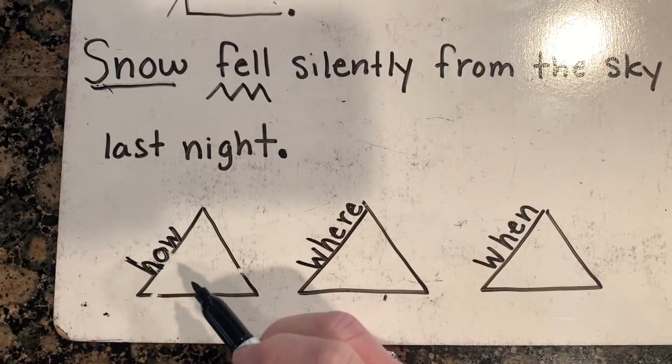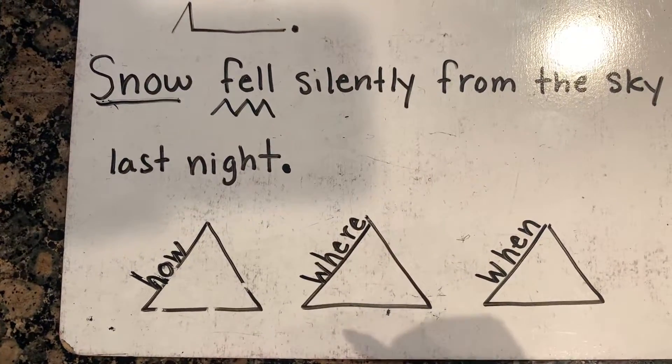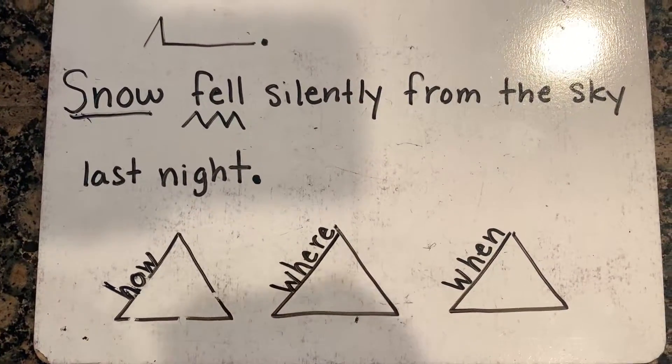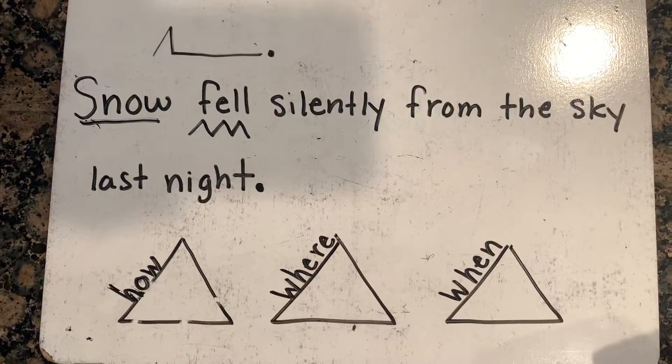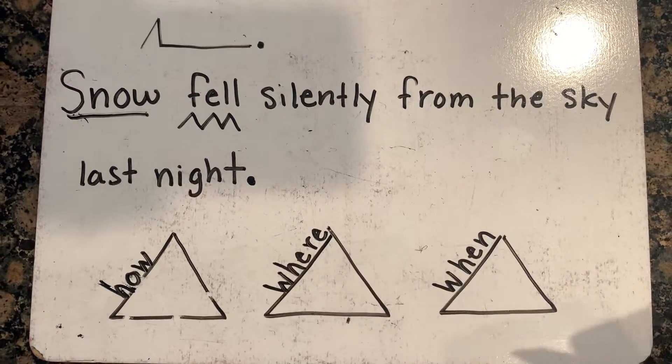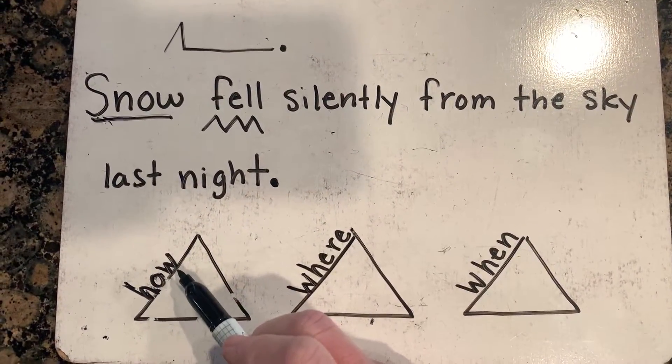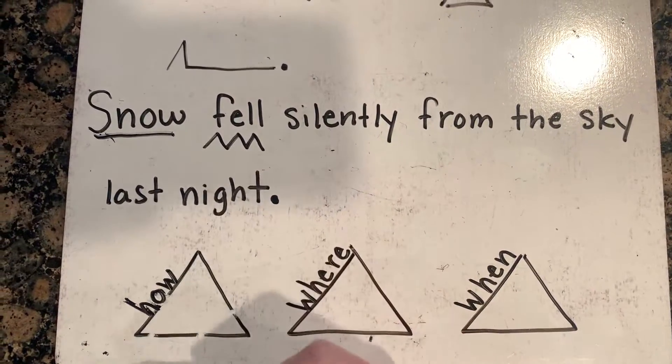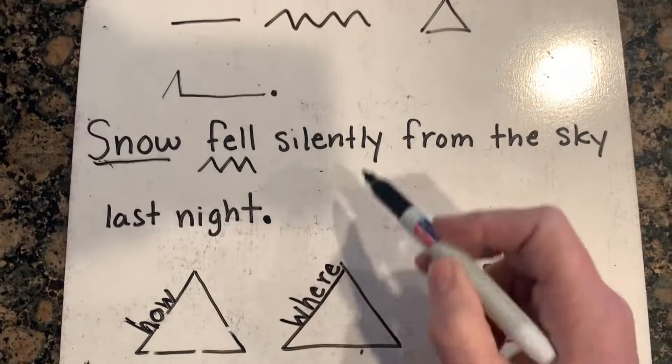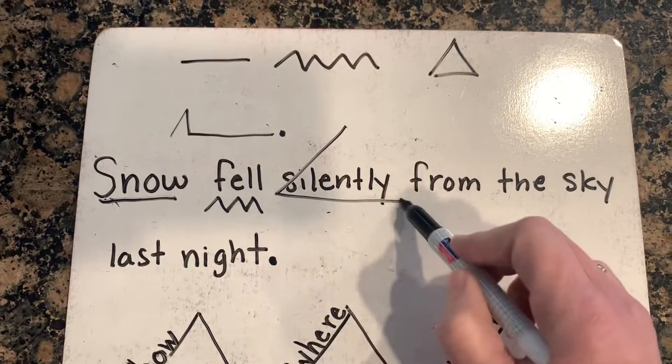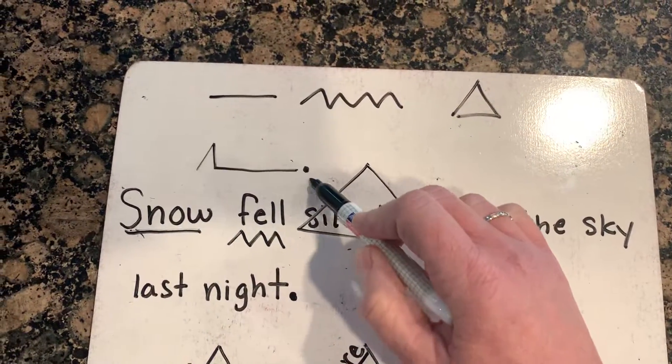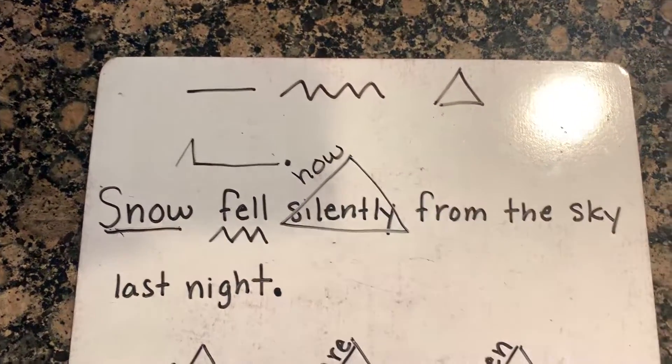Now I go down to my question words. How do I expand my sentence in order to make it stronger and bigger and better? I start with how. Do I know how the snow fell? I sure do. It's right here. How did it fall? Silently.